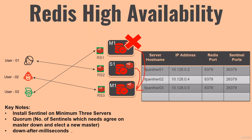There is something called the down-after-milliseconds parameter, which is configured in the sentinel.conf file. This tells Sentinel the number of milliseconds it should wait after the master is unreachable. Whatever number you define is the minimum time Sentinel will wait for the master to come back. If the master cannot be connected for that amount of time, Sentinel will start the election process for a new master.